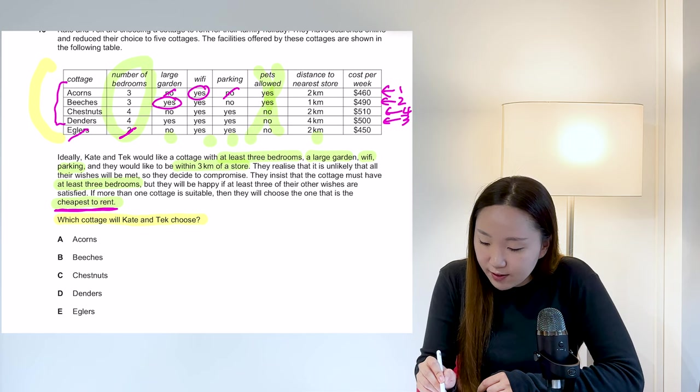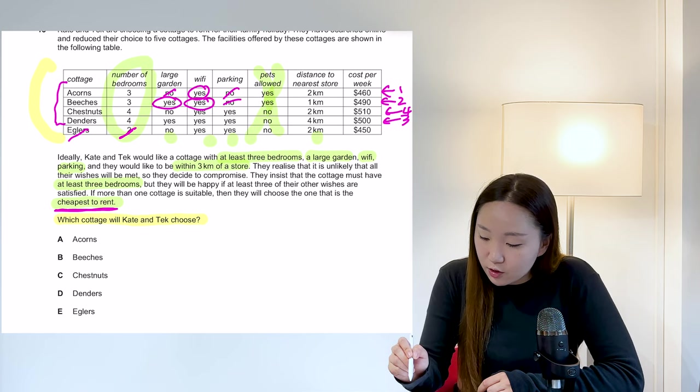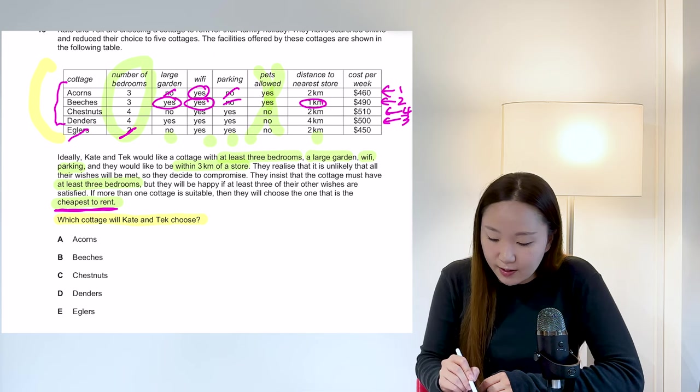Large garden, yes. Wi-Fi, yes. Parking, no. Within three kilometers, yes. So it's going to be B.